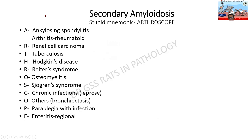Earlier, amyloid used to be divided into primary and secondary amyloidosis. There is a mnemonic for secondary amyloidosis: ARTHROSCOPE — A for ankylosing spondylitis, R for renal cell carcinoma, T for tuberculosis, H for Hodgkin's, R for Reiter's syndrome, O for osteomyelitis, S for Sjögren's, C for chronic infection such as leprosy, P for paraplegia with infection, and E for enteritis such as Crohn's disease. Even if you remember tuberculosis, Hodgkin's disease, and leprosy, it is good enough.